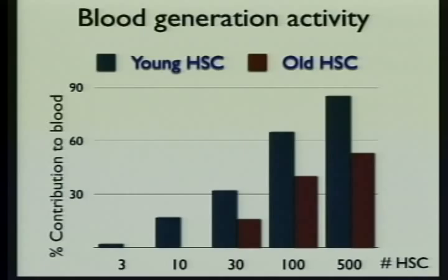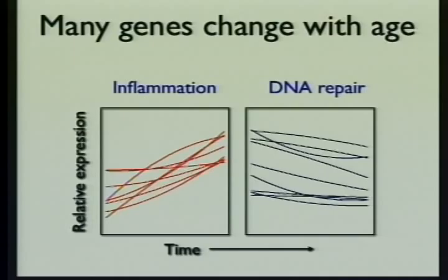When we compared young stem cells versus old stem cells in this bone marrow transplant assay, we found that no matter how many different numbers of stem cells we put into the mice, the young stem cells were always better — almost double the activity of their old counterparts. So we used this gene expression technology to look globally at what changes could account for this functional deficit that occurs in the stem cells with age.